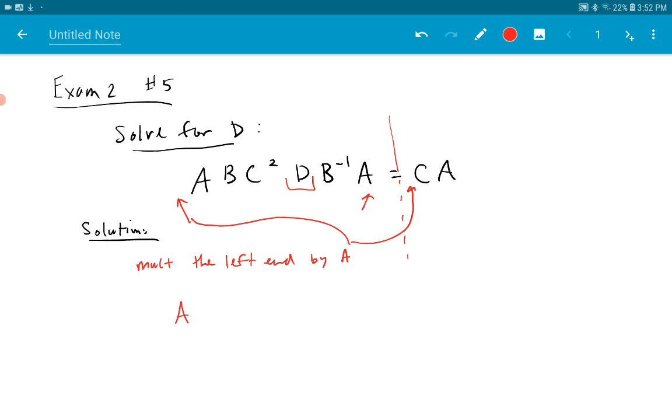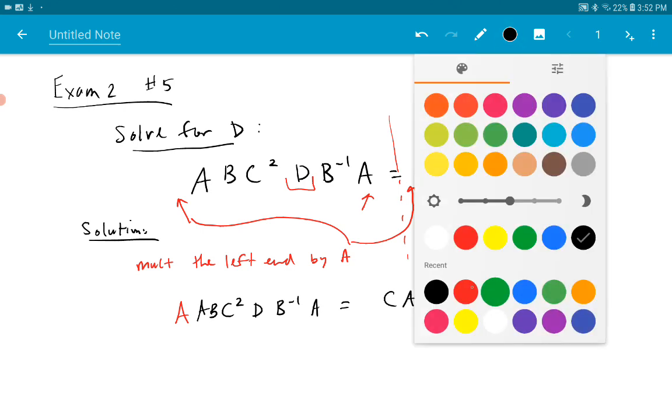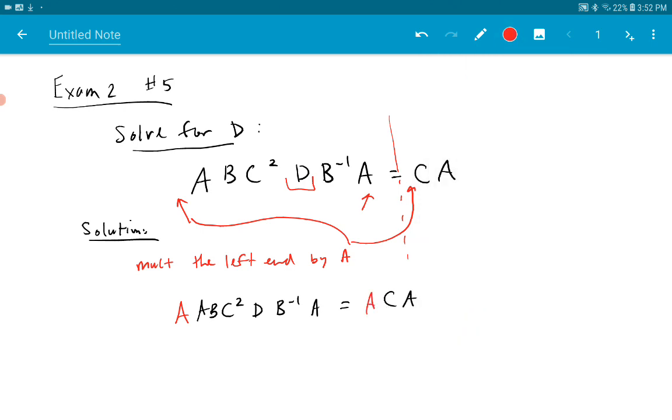We get A, A, BC², DB⁻¹A equals, put the same A here. It has to be on the same end of both sides. I'm sorry, I don't want to use A, I want to use A inverse. I apologize, A inverse. Multiply by A inverse here and here.